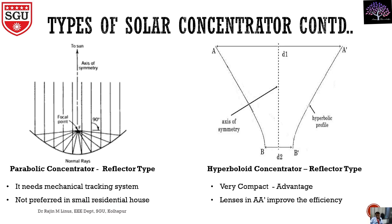Why does it help to improve efficiency? All the light will pass through this big lens due to its high diameter. If we use the smaller side, surely the concentration will be less since it will only focus on a small area. Due to this, the efficiency of this concentrator in the AA dash region will be high.